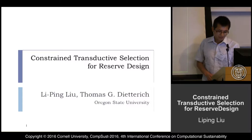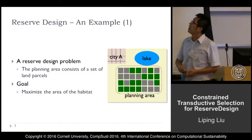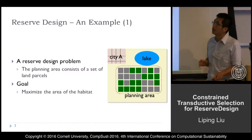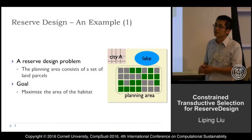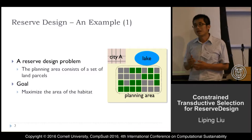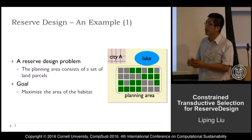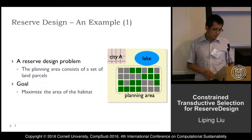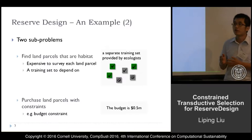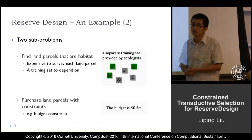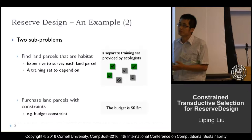Let's first see what kind of reserve design problem we have. Suppose we have a planning area consisting of a set of land parcels, and we want to purchase a subset of these land parcels to protect an endangered species. The goal is to maximize the land parcels purchased that have the species present. So potentially there are two sub-problems. The first is to find which land parcels have the species present — we call these land parcels positive in the machine learning world.